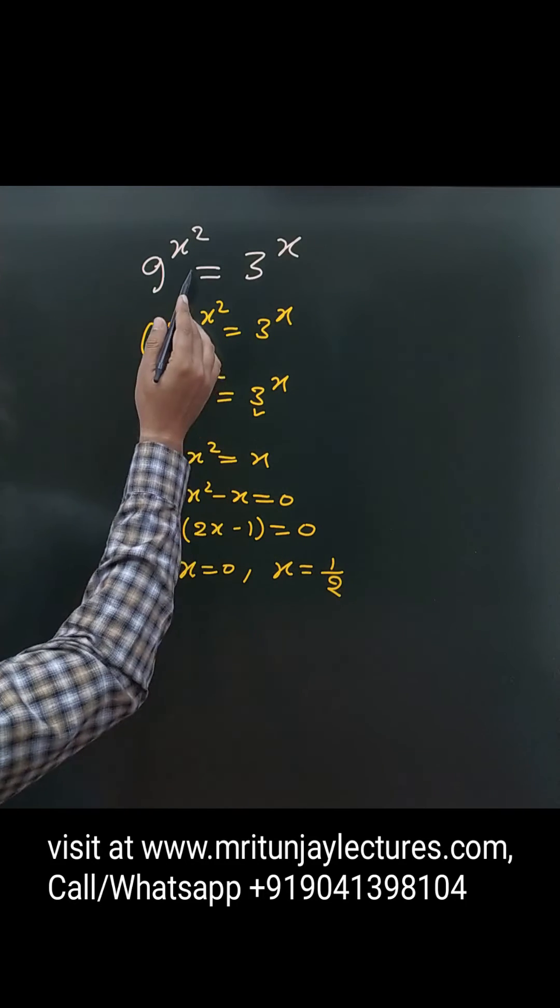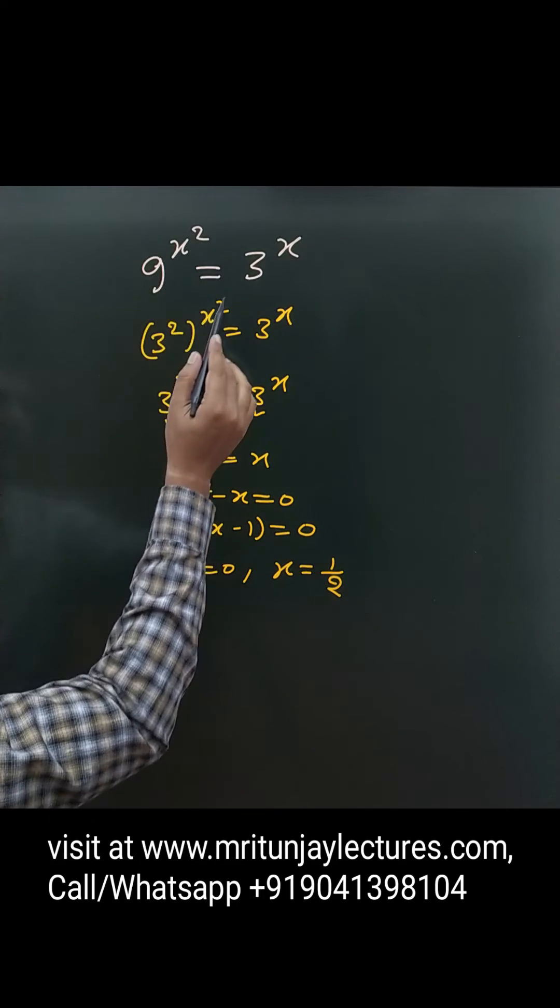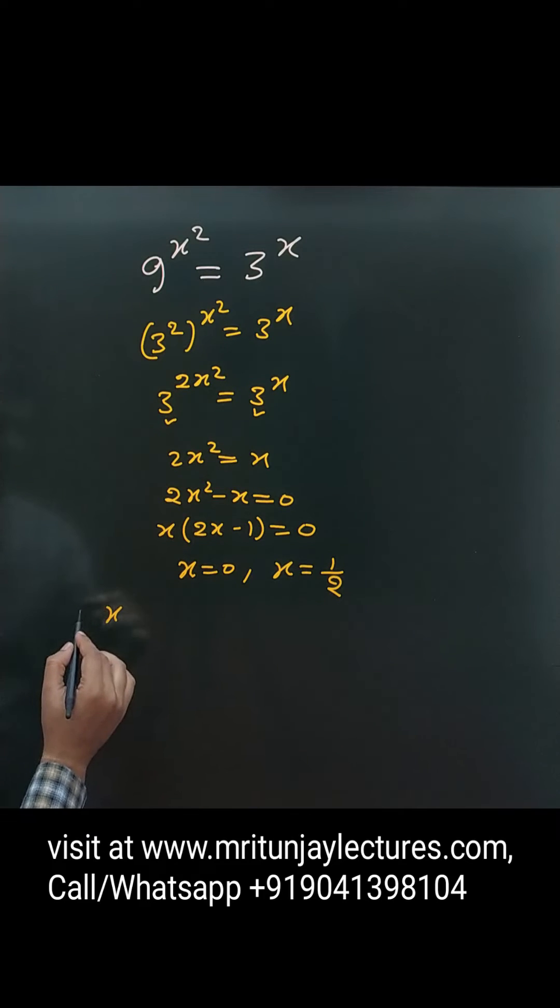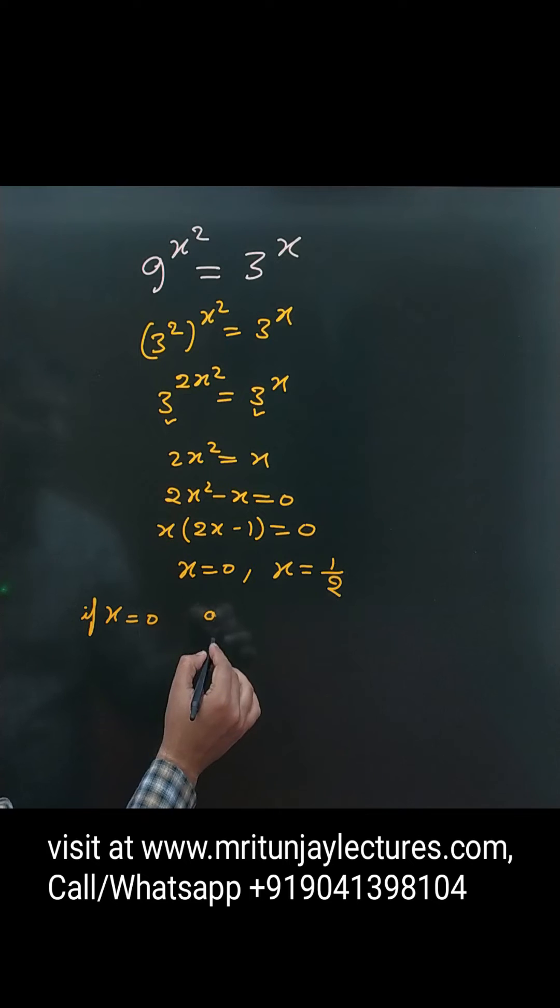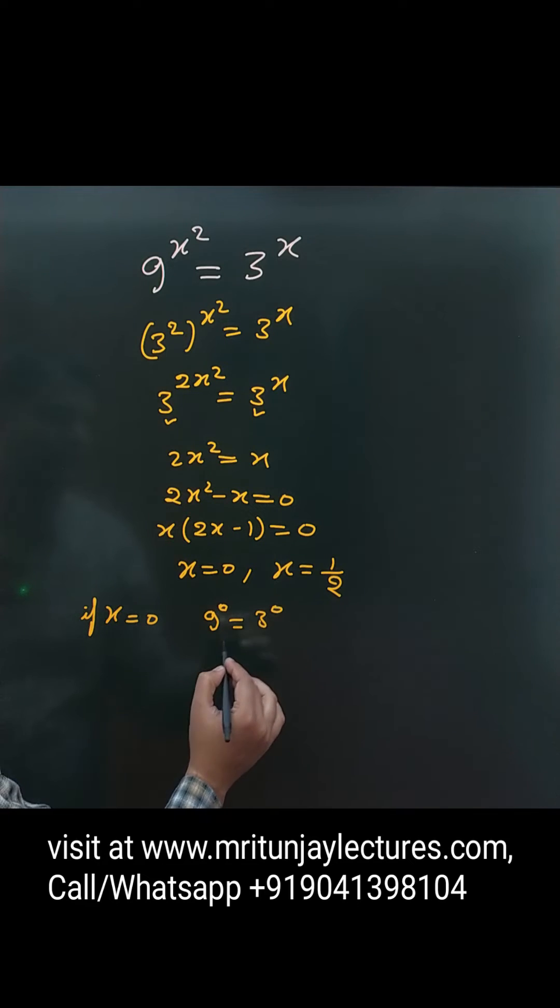If x equals 0 - case first - then 9 to the power 0 minus 3 to the power 0. One equals 1, which means it's right.